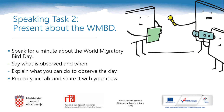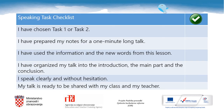The second speaking task is to present about the World Migratory Bird Day. This checklist can help you with both task one and task two. Make sure you have prepared notes for a one-minute-long talk and that you have used the information and the new words from this lesson. Organise your talk into an introduction, the main part, and the conclusion. Check that you speak clearly and without hesitation. Then your talk is ready to be shared with your class and your teacher.